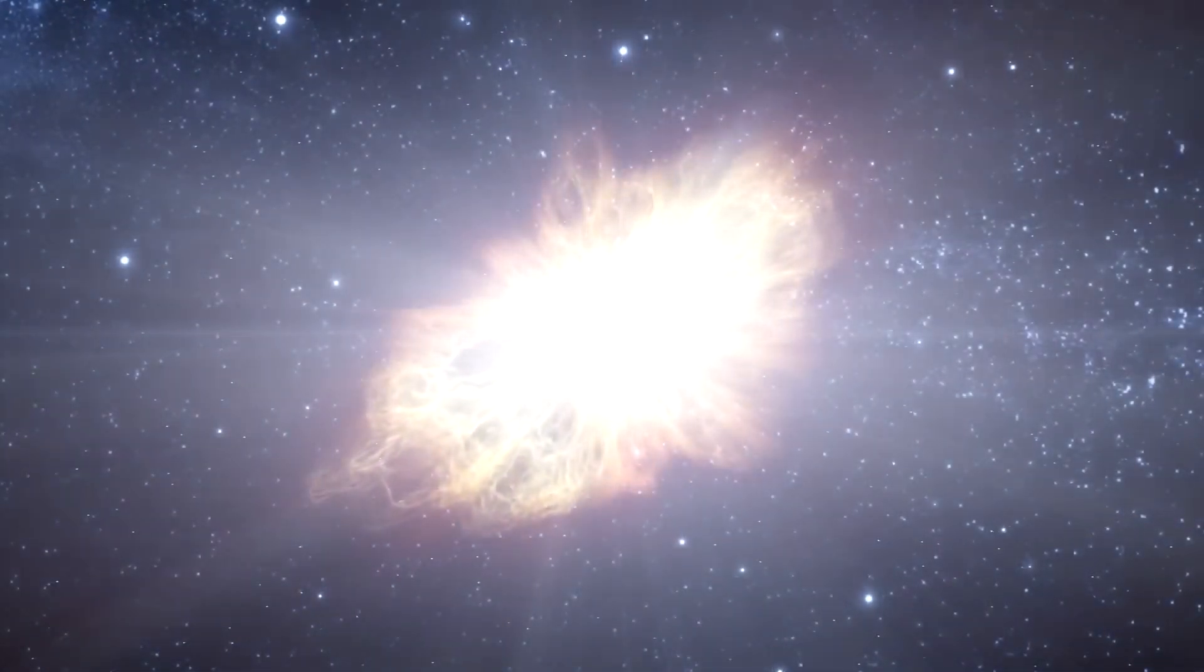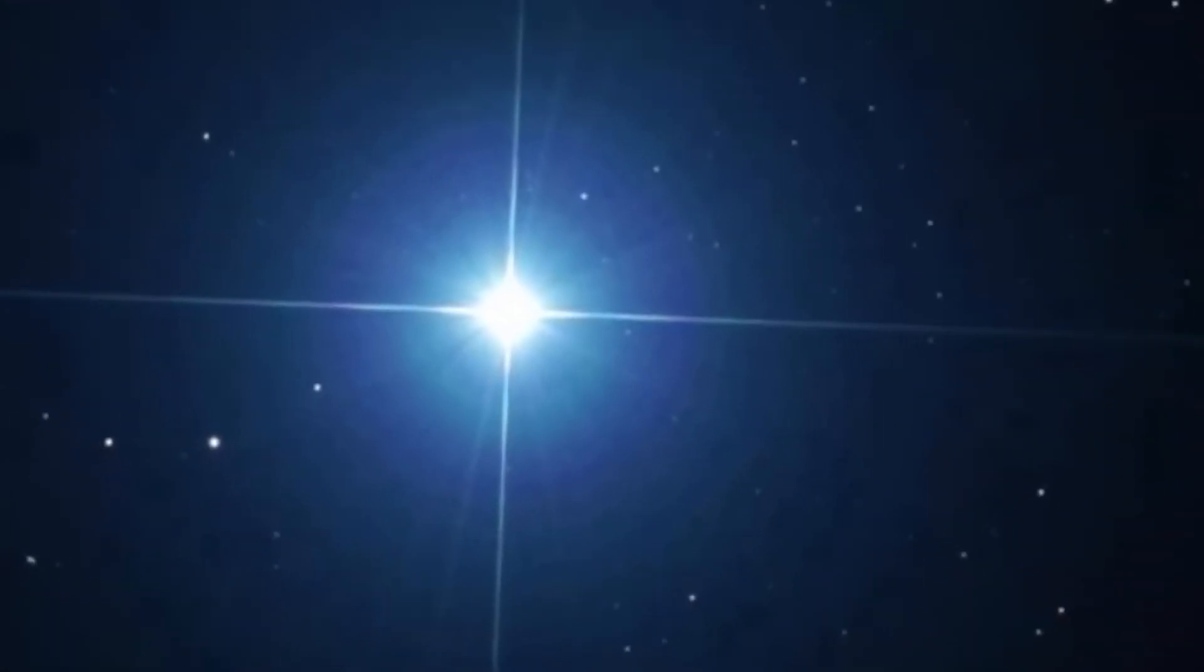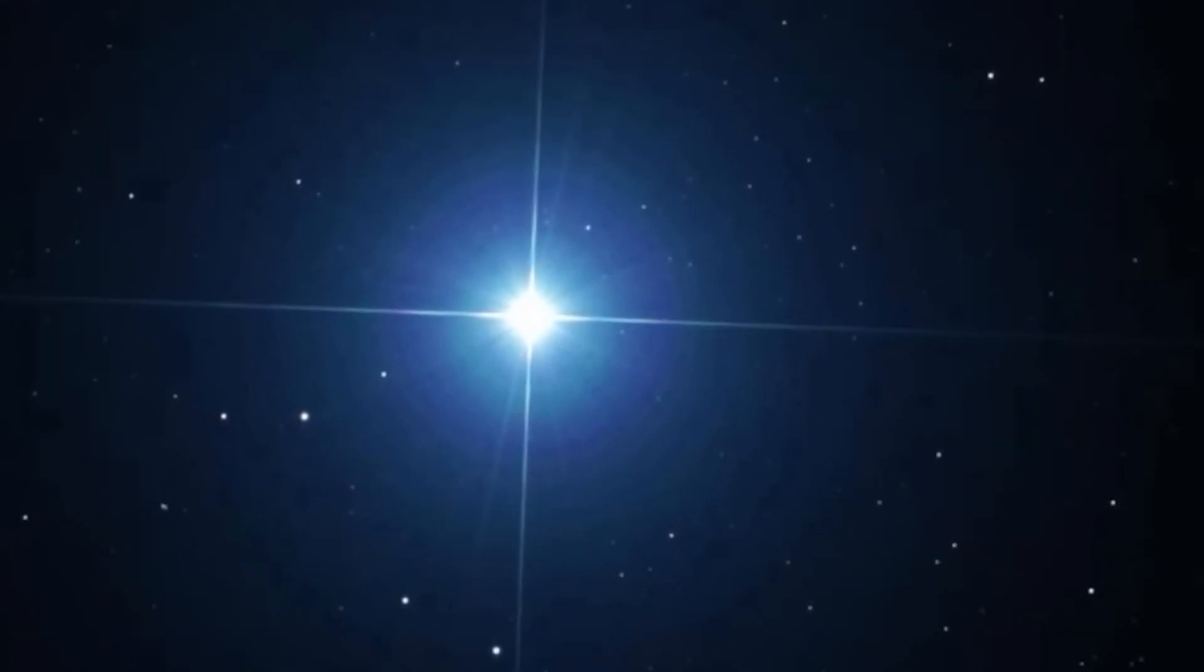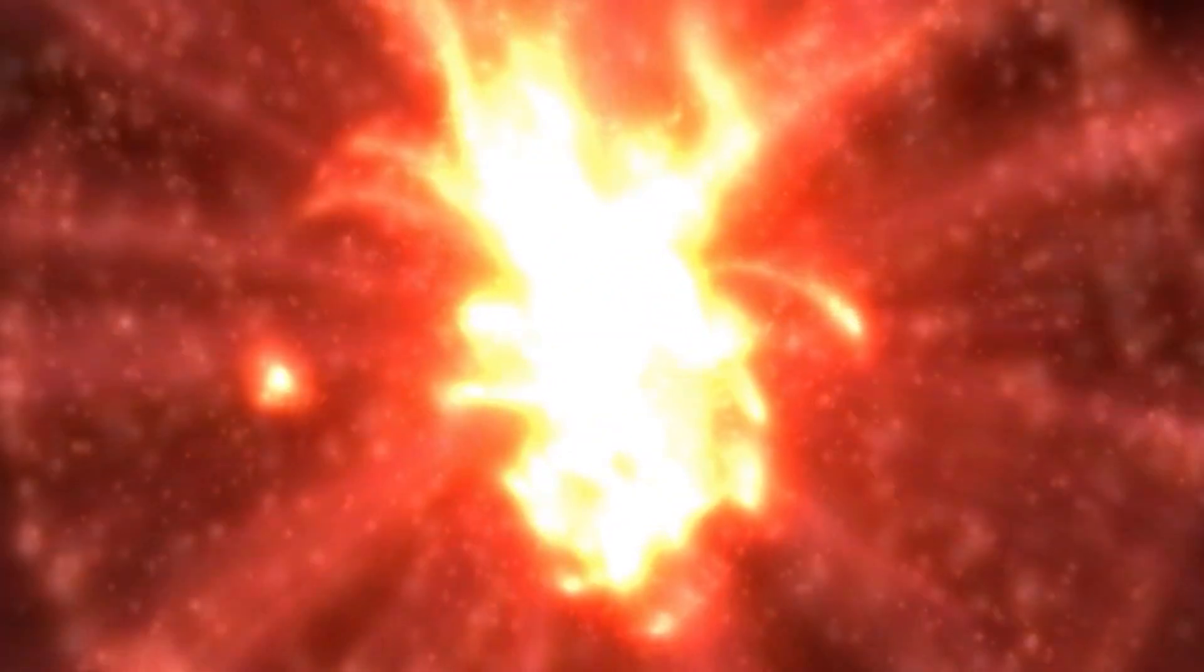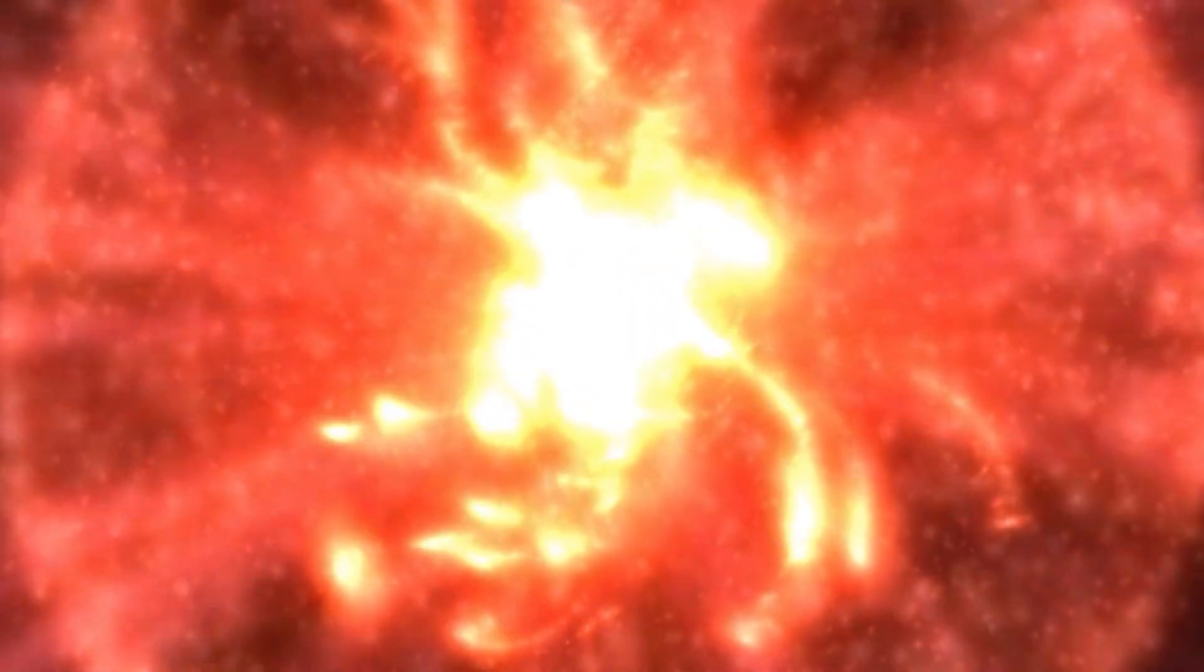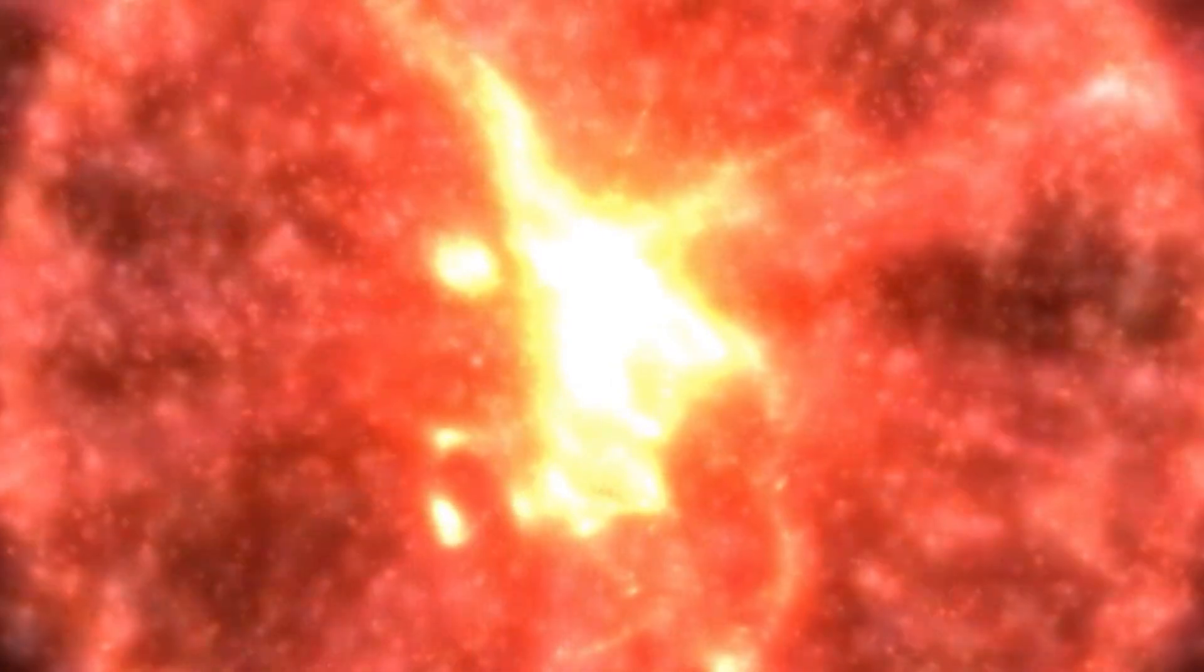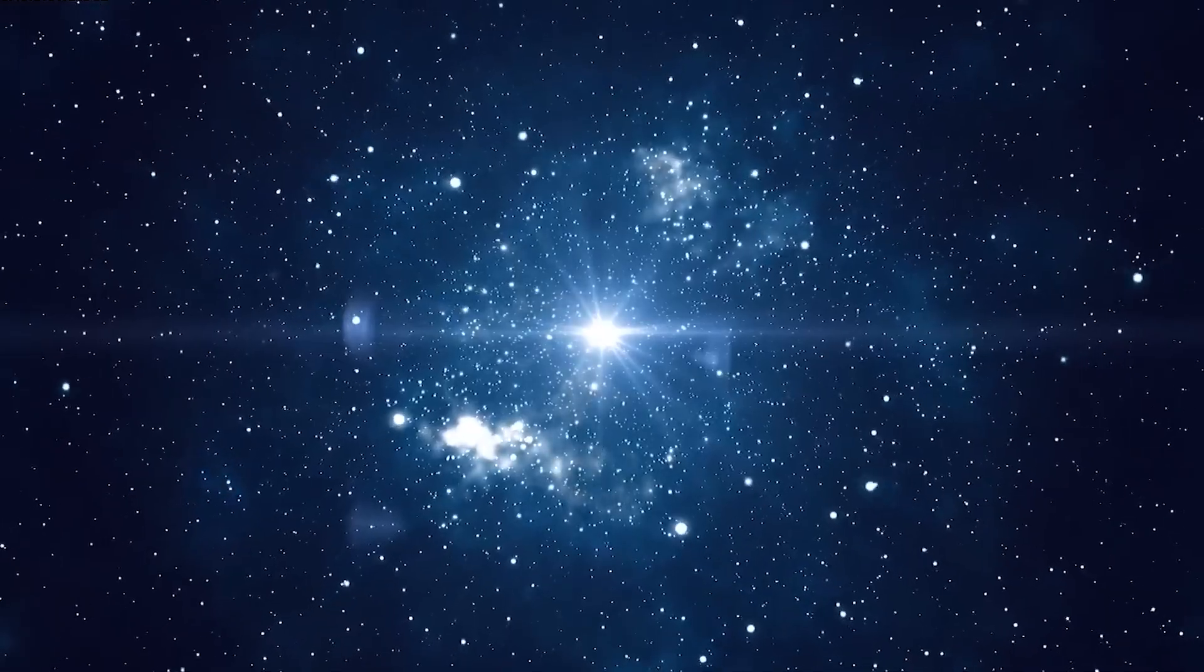As Polaris approaches the end of its nuclear fuel supply, it will undergo a graceful transformation, shedding its outer layers and evolving into a white dwarf. This transformation won't result in a supernova spectacle, but will end peacefully, leaving behind a small yet incredibly dense stellar remnant.